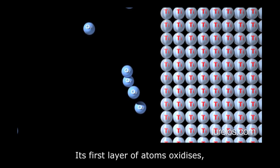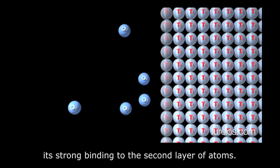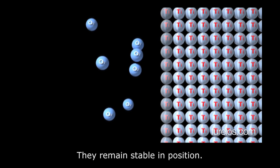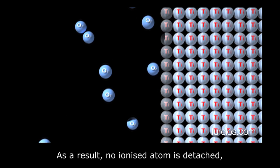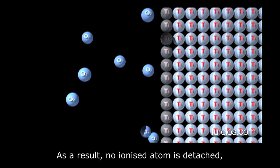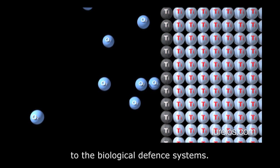Its first layer of atoms oxidizes, but this does not alter its strong binding to the second layer of atoms. They remain stable in position. As a result, no ionized atom is detached, making it invisible to the biological defense systems.